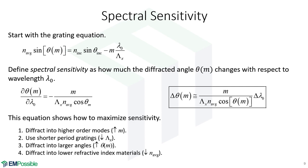From this equation, we can immediately tell how to make our grating spectrometer more sensitive — we want this to be a big number. We can make M large, meaning we diffract into higher order modes, though they're more sensitive and there are lots of other modes nearby. We'd like to use shorter period gratings, diffract into larger angles by using a larger angle of incidence, and use low refractive index materials — so typically grating spectrometers will be in air.